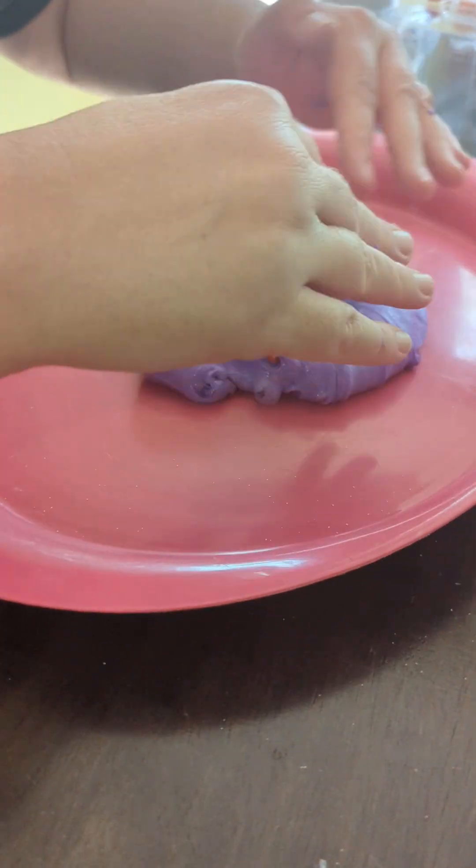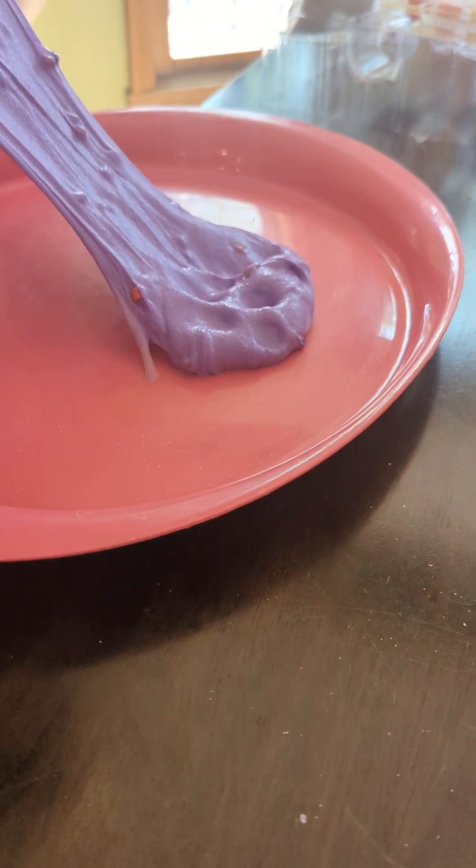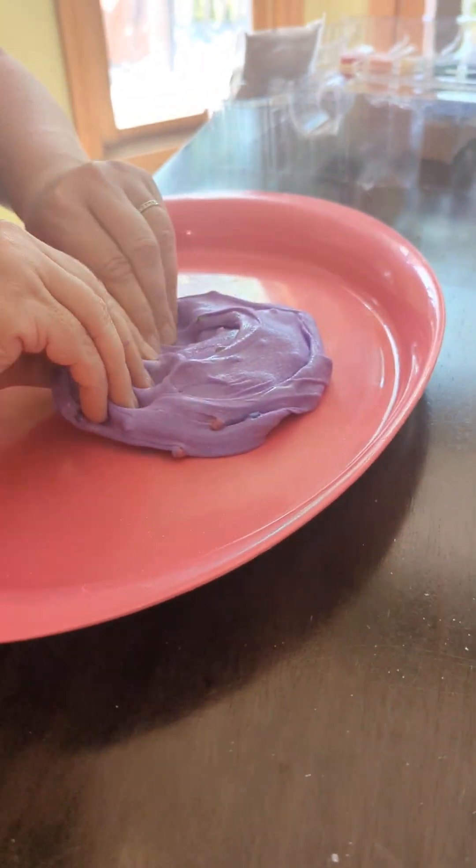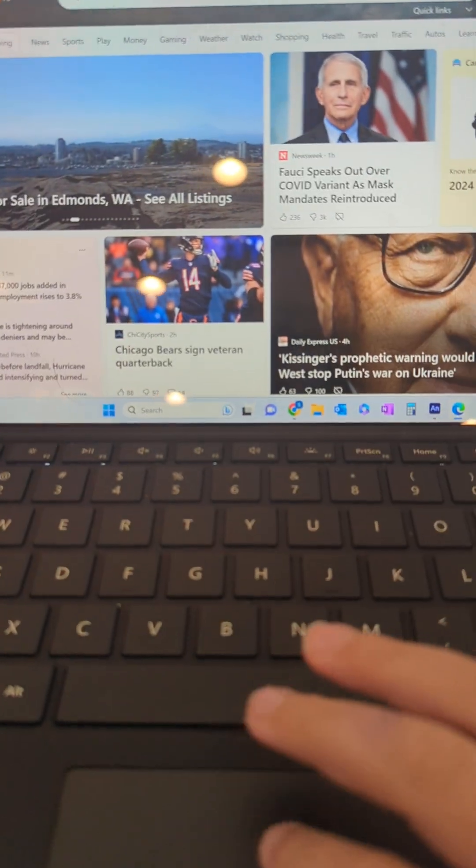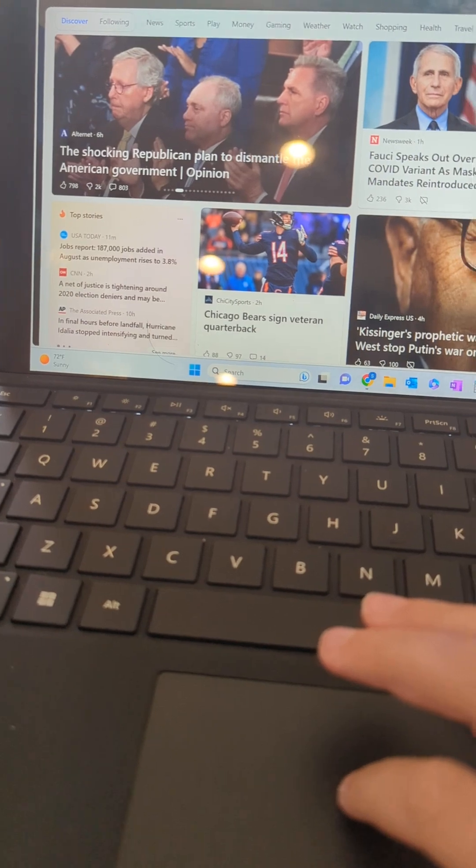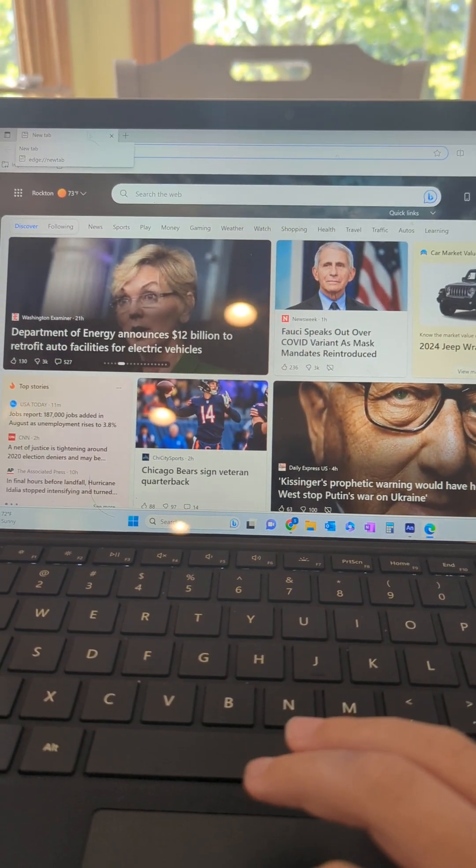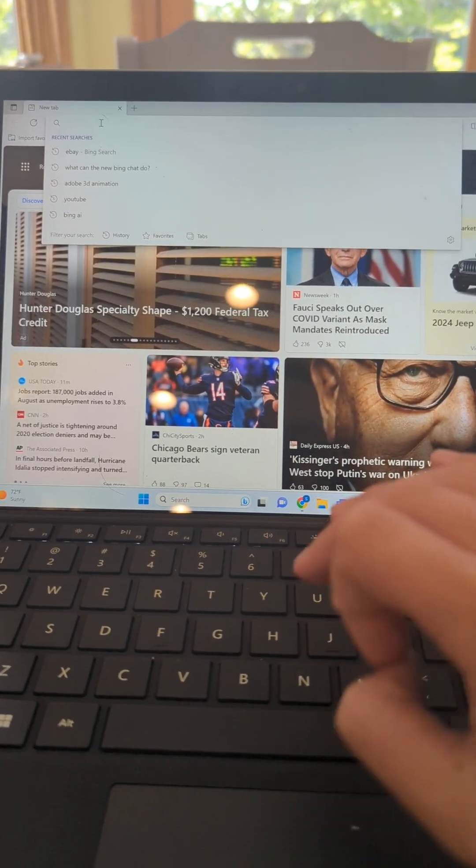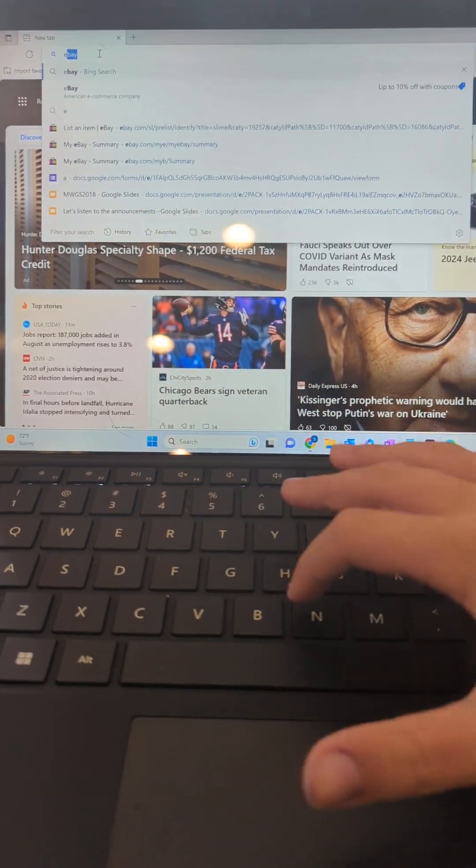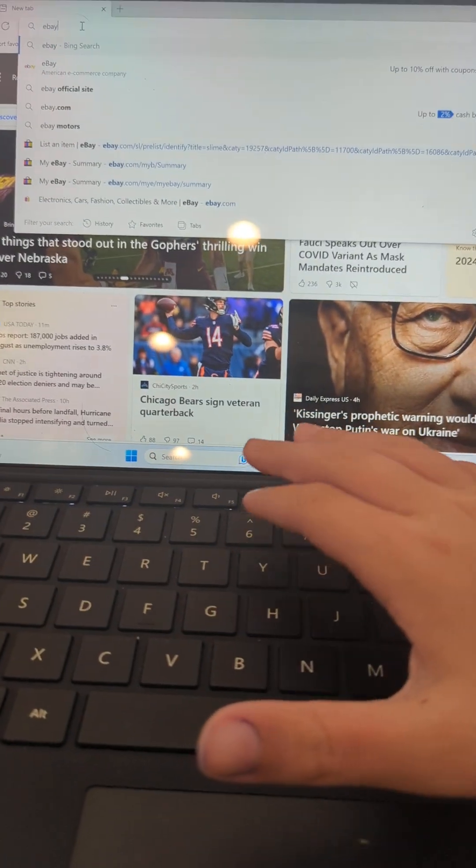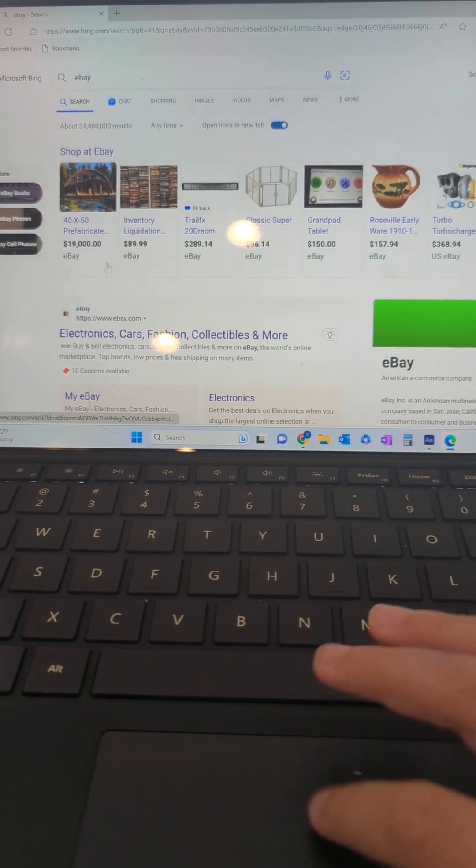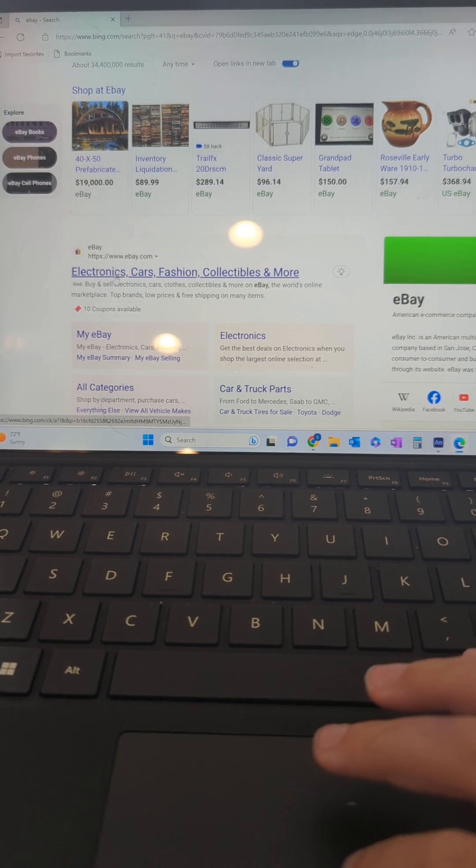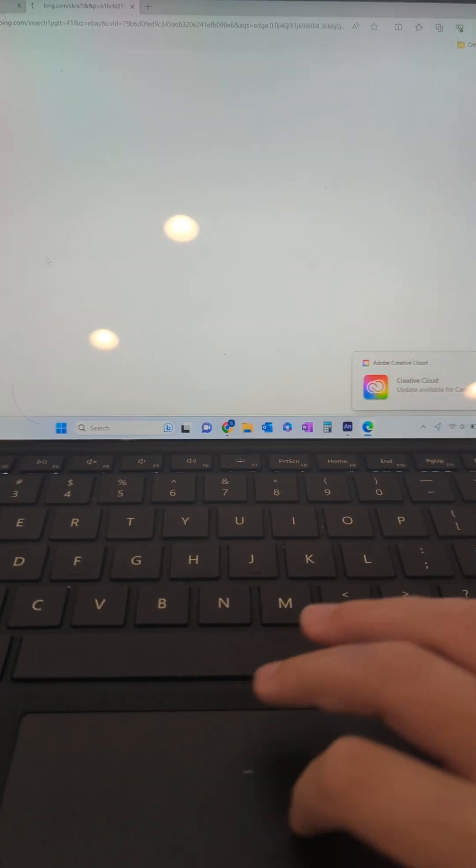And speaking of slime, you can buy slime from today's sponsor. How you get to today's sponsor is that you first search eBay. And then you hit enter. And then you go to something that looks like this. You tap on there.